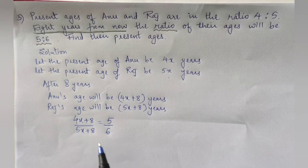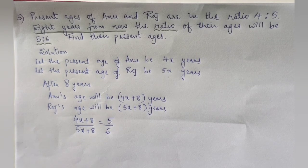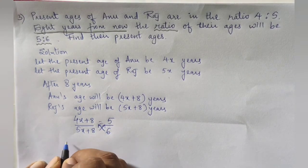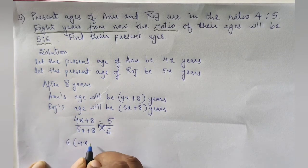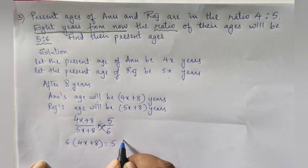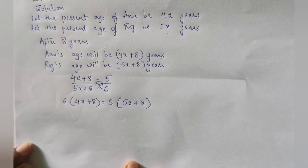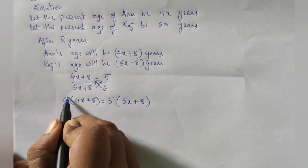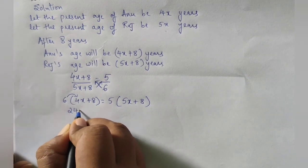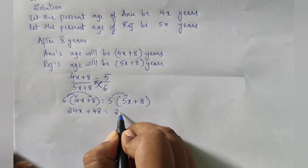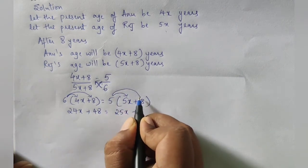We have now got a linear equation. The first step is to cross multiply: 6 × (4x + 8) = 5 × (5x + 8). Opening the brackets: 6 × 4x = 24x, 6 × 8 = 48, 5 × 5x = 25x, 5 × 8 = 40. So 24x + 48 = 25x + 40.